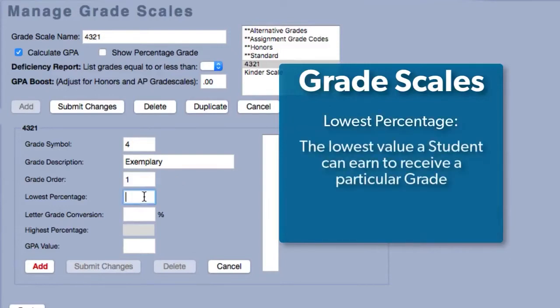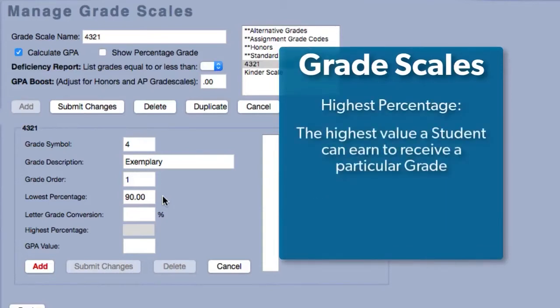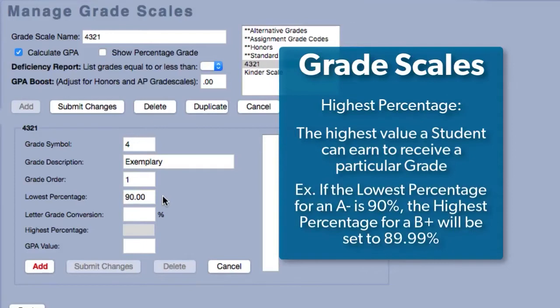Lowest percentage refers to the lowest numerical equivalent for a particular grade. For example, the lowest percentage for an A-minus on the A-through-F scale is typically 90%. Highest percentage is automatically calculated for you based on the lowest percentage of the preceding grade. In other words, if the lowest percentage for an A-minus is set to 90%, then the highest percentage for a B-plus would automatically be set to 89.99.